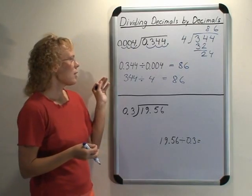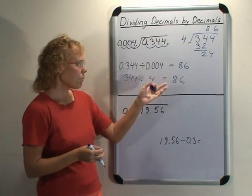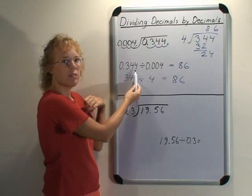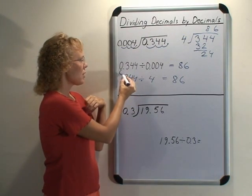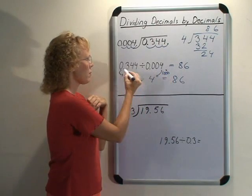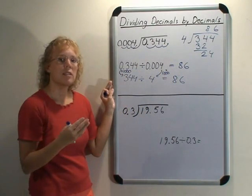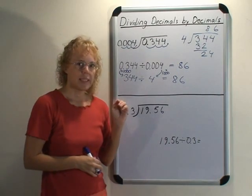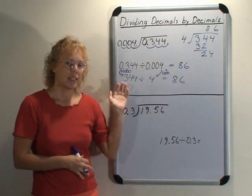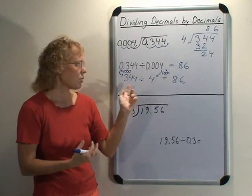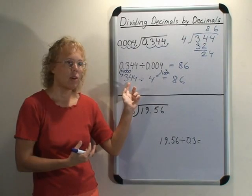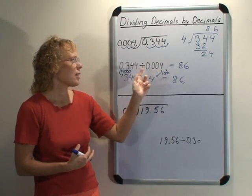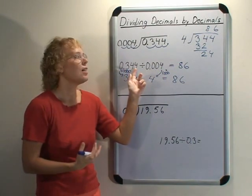What happens here is that both the dividend and the divisor get multiplied by thousand. 0.004 became 4, and 0.344 became 344. Both of these got multiplied by thousand. That's what moving the decimal point three steps means. And if you think about it this way, it makes sense. Division can be thought of as how many times does the divisor fit into the dividend. So 4 fits into 344 the same amount of times.